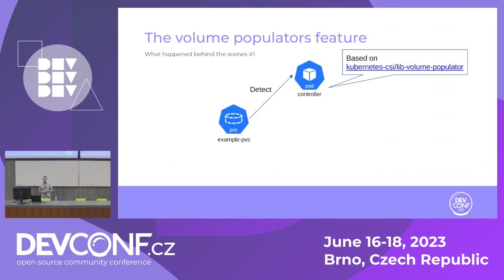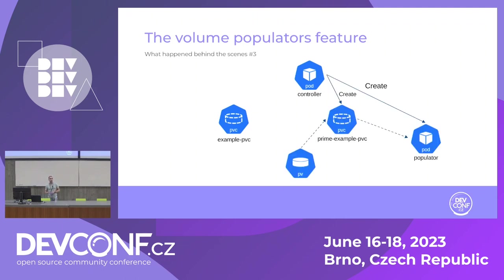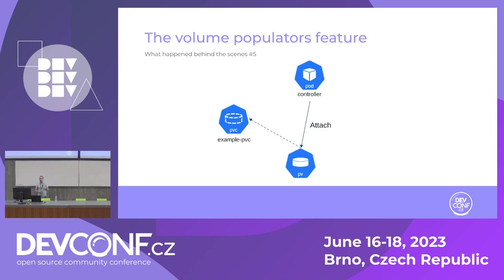But let's talk about how it's done. When we post a PVC that refers to a CR, there is a controller that detects it — this brings us to the second part: the library called lib-volume-populator that facilitates implementation of such controllers. The controller detects the PVC, reads the referenced custom resource, and based on the data from both, creates a prime PVC similar to the original. This prime PVC is used by a populator pod, which writes data into the allocated PV. Once done, the controller attaches the PV to the original PVC.